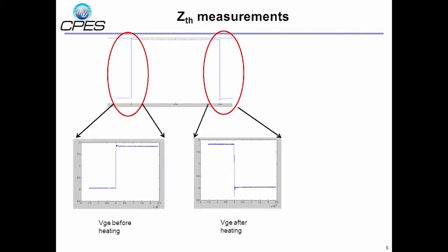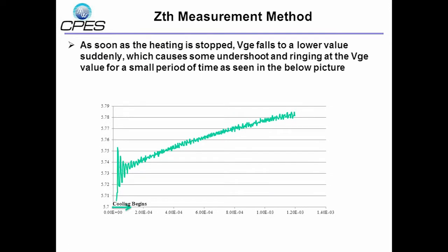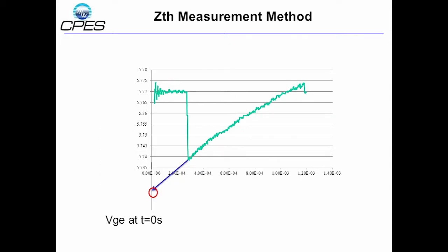Hence, the VGE just before heating and the VGE just after heating is used to calculate the ZTH. The VGE just after heating has a voltage spike since the VGE falls from a higher value. In order to avoid the errors in the junction temperature sensing due to the spike, we consider the part of this VGE after the spike or noise and then extrapolate it backwards using power fitting methods. This gives us the VGE immediately after the heating pulse has stopped.